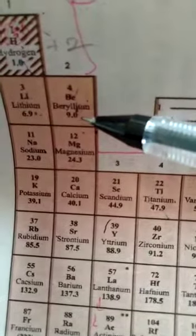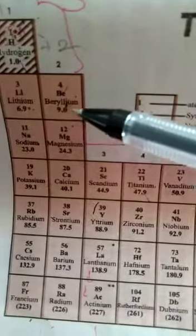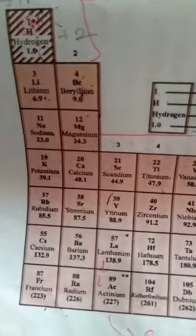And top number is called atomic number, down number is called mass, atomic weight. Okay, so atomic mass, down number is called as atomic mass.